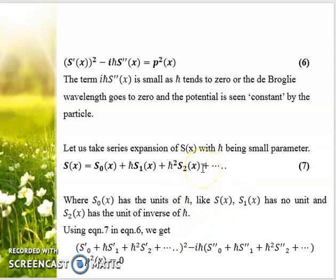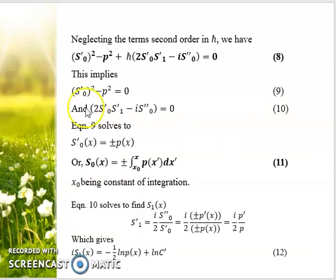Using equation 7 in equation 6, we get this expression. We keep solving and arranging the terms which are free with ℏ and those with ℏ. We have two expressions: one without ℏ and one with ℏ. Equating both to zero, from the first term we get S₀(x) = ±∫[x₀ to x] p(x')dx' (equation 11). From the second bracket term equated to zero, we get s₁' = (i/2)(s₀''/s₁'), and finally we have an expression for s₁.